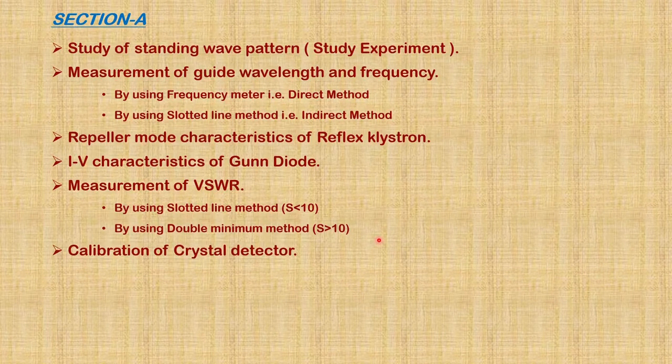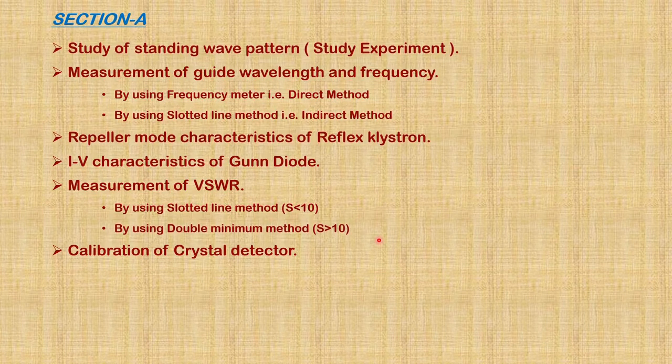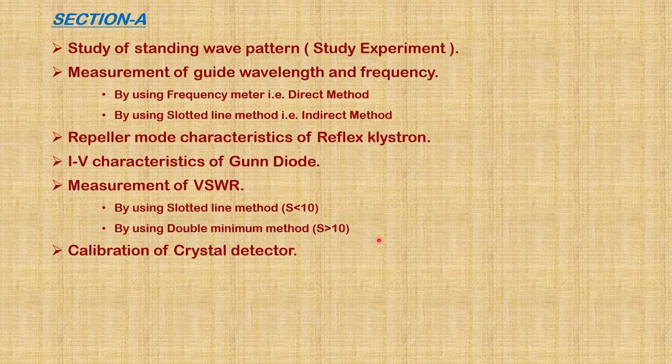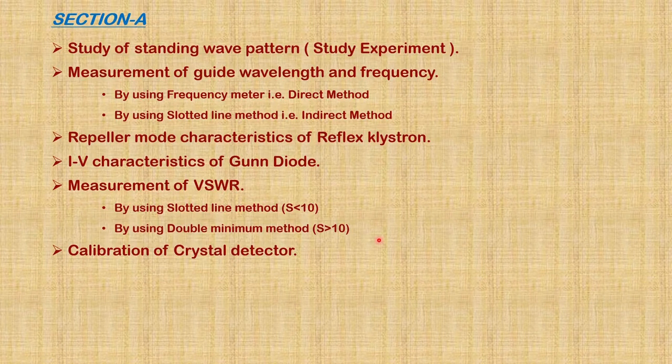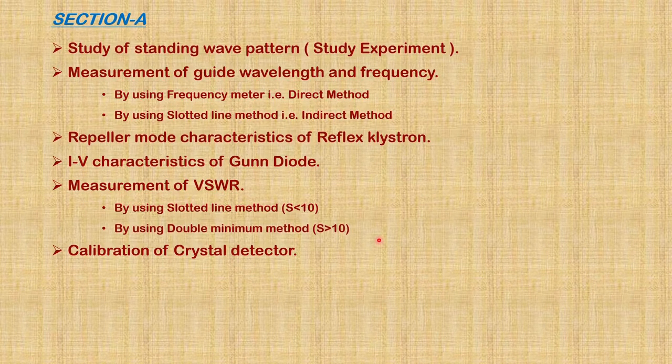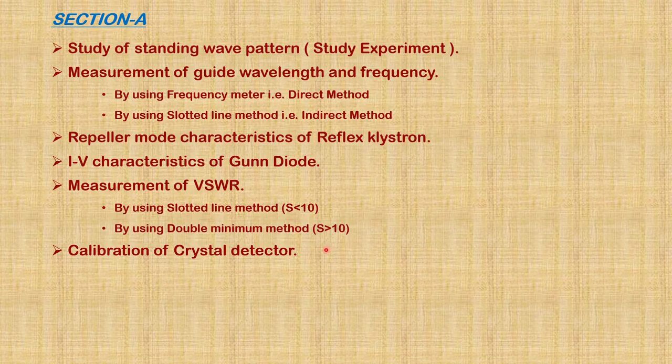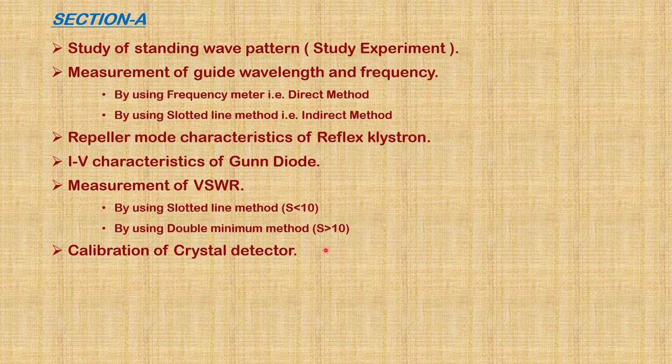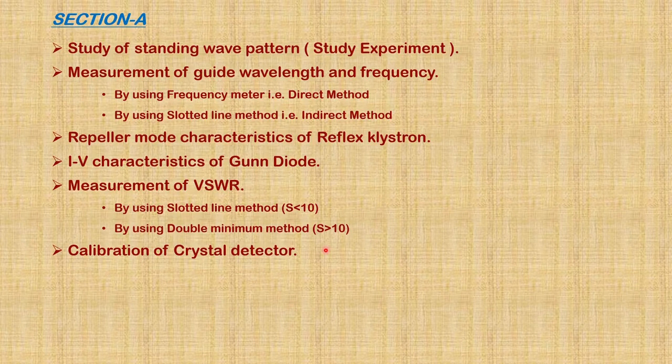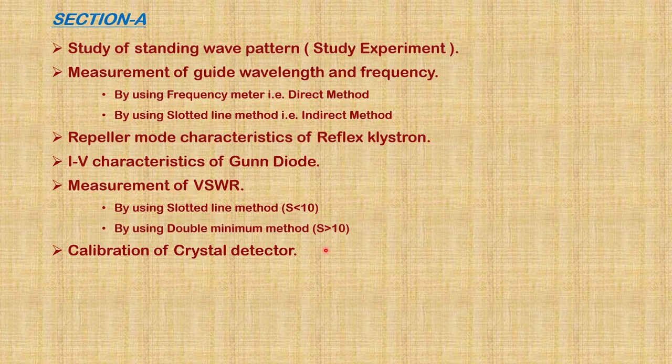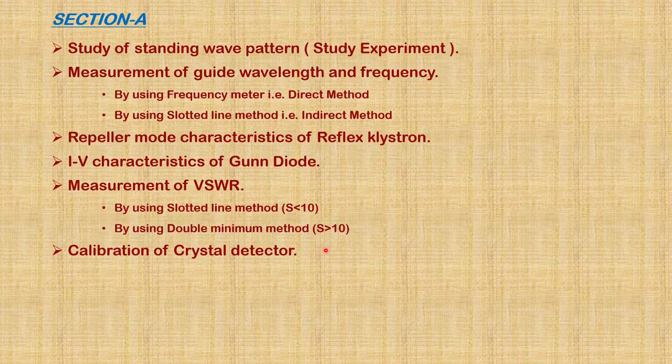The next experiment is calibration of crystal detector. Generally, a crystal detector acts as a square law device and works as a low-pass filter. Here we are going to prove that current I is proportional to V to the power gamma, where gamma is approximately 2.